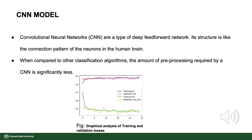Convolutional neural networks are a type of deep feed-forward network with one or more convolutional layers, pooling layers, fully connected layers, and an output layer as its fundamental structure. Its structure resembles the connection pattern of neurons in the human brain. Compared to other classification algorithms, the amount of pre-processing required by a CNN is significantly less. CNNs are frequently preferred over other types of neural networks because they can effectively capture spatial and temporal relationships in an image by applying suitable filters.